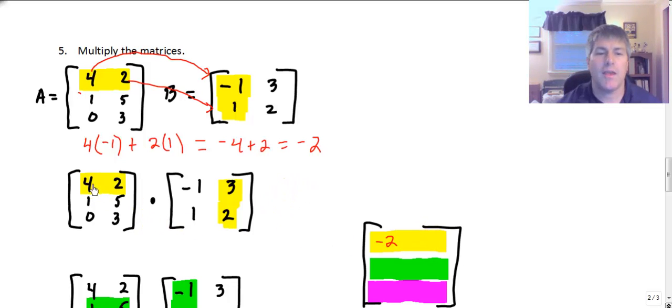Now I'm going to multiply row 1 times column 2. And that's going to go in the location, row 1, column 2. And I'm going to do the same kind of thing. But now I'm going to multiply 4 times 3. So 4 times 3. And I'm going to add it to 2 times 2. Which is equal to 12 plus 4 or 16. So that goes in my second location.